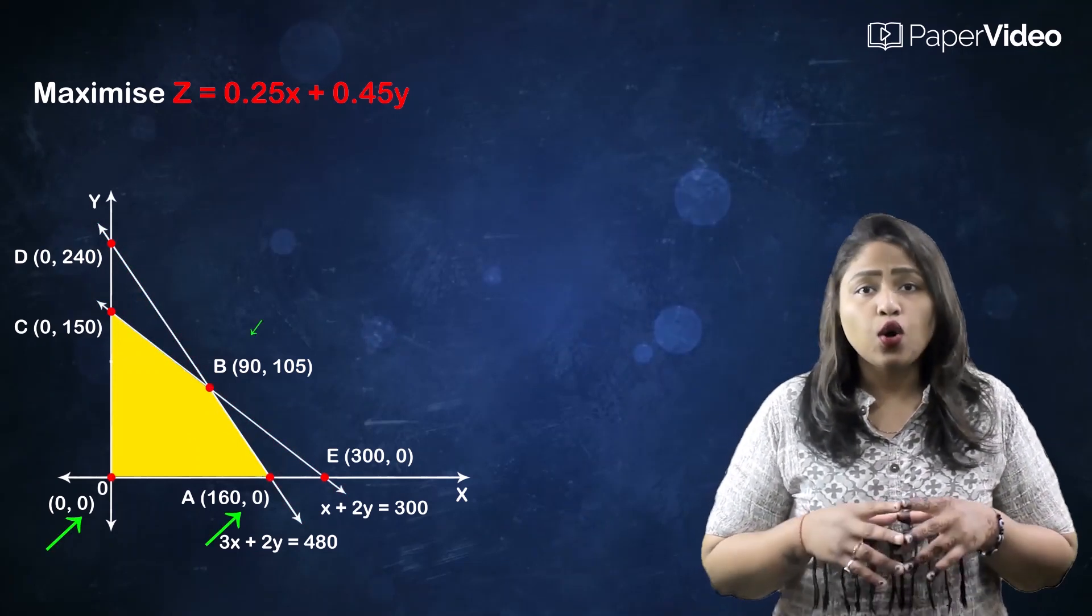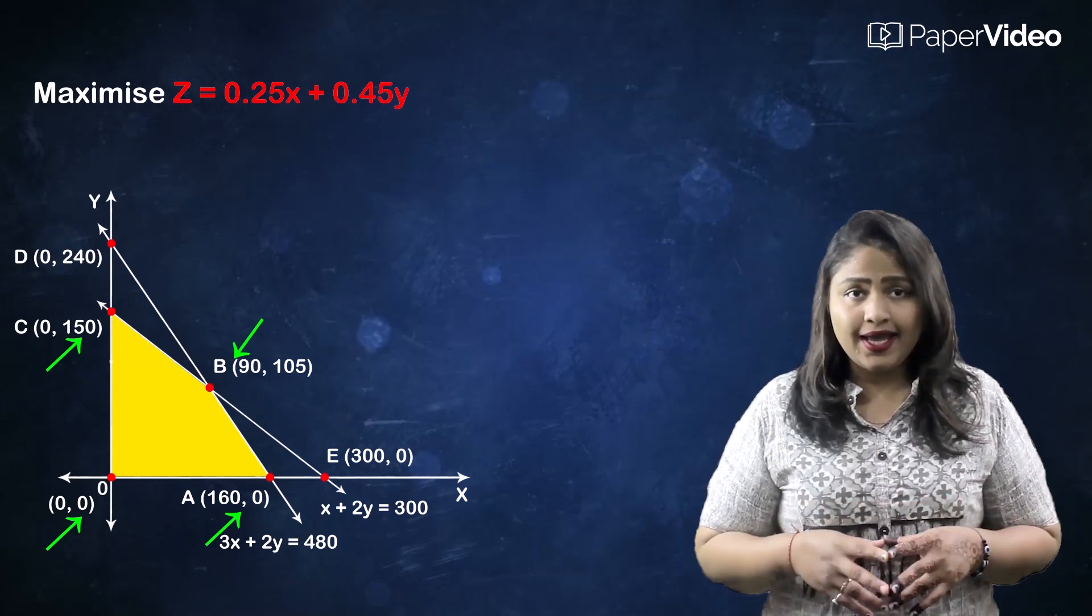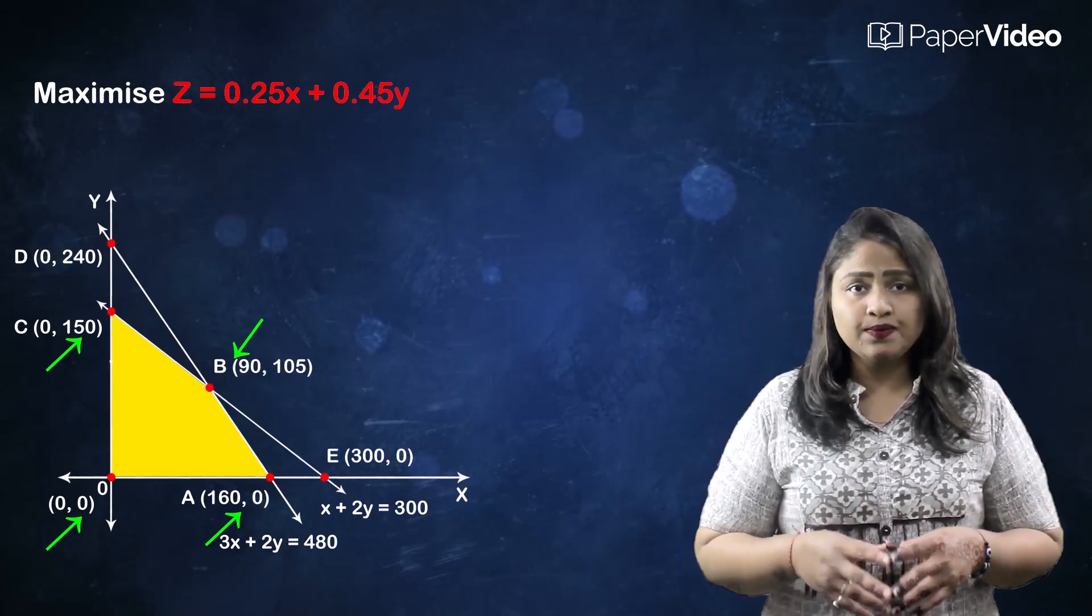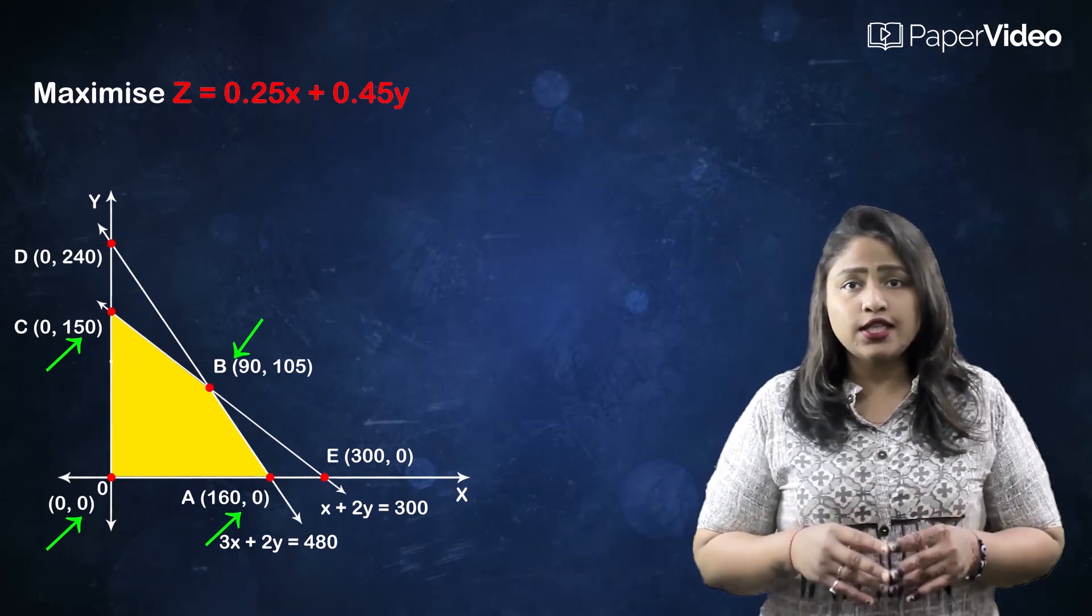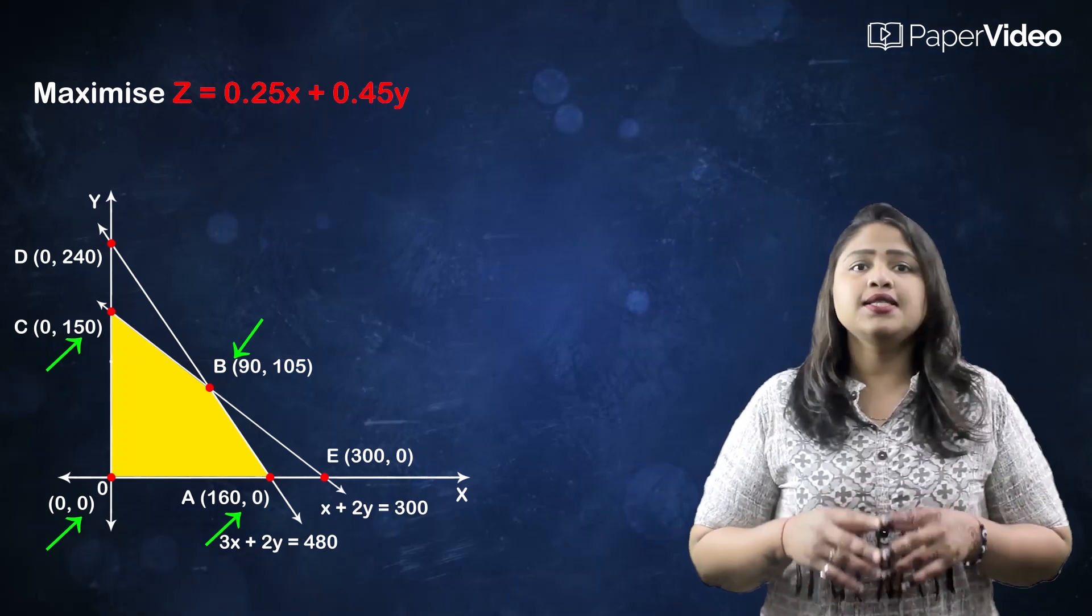The corner points are O(0, 0), A(160, 0), B(90, 105), and C(0, 150). Step 4: